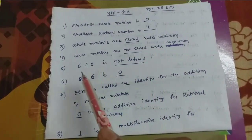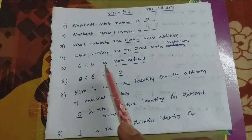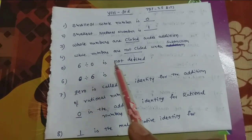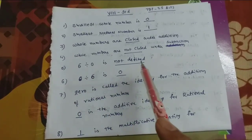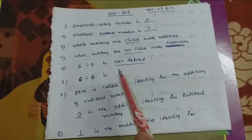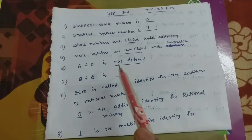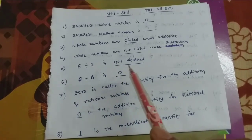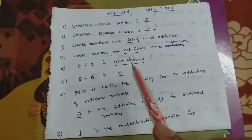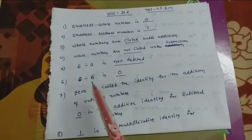Any number divided by 0 is not defined. For example, 6 divided by 0 is not defined.